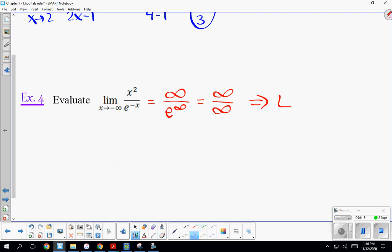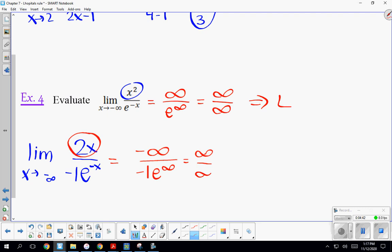If we take the derivative of the top and of the bottom, here we're going to get 2x. In the denominator, we'll get e^(-x) times the derivative of that exponent, which is -1. We're still finding the limit as x approaches negative infinity. If we try direct substitution, in the numerator we're going to get negative infinity. In the denominator, we'll get -1e^(+∞), which is still infinity over infinity.